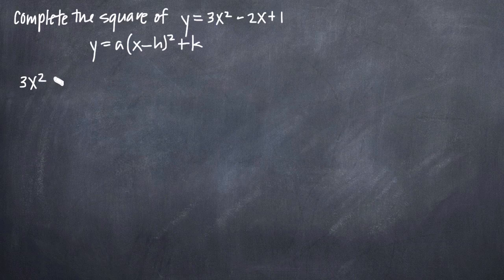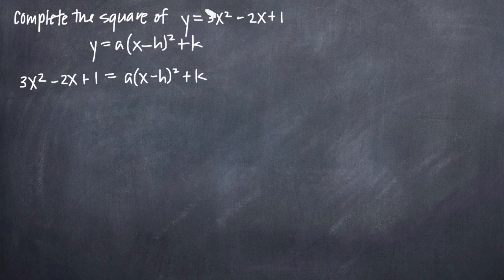So, we'll set 3x squared minus 2x plus 1 equal to a times the quantity x minus h squared plus k. a, the first variable here on the right hand side, will always be equal to the coefficient on the x squared term here. In our problem, that's just 3. So, we can go ahead and plug that in for the right hand side and say that a is equal to 3.